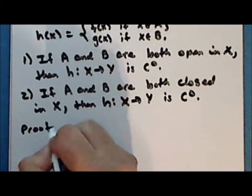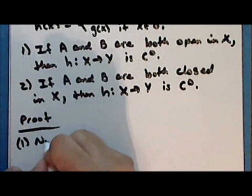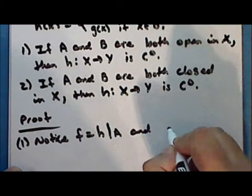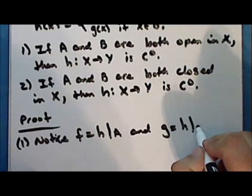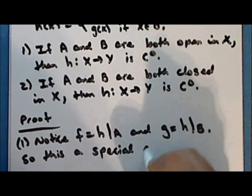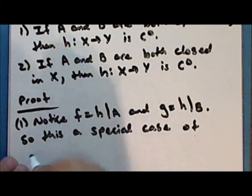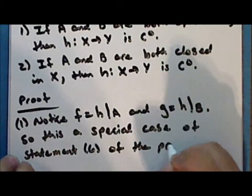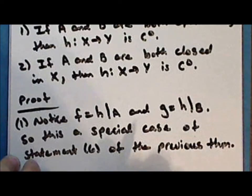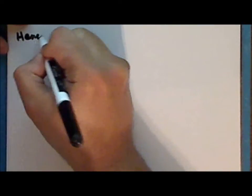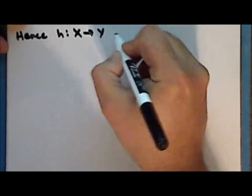Proof, first statement. Notice that the function f is the restriction of the function h to the subspace a, and the function g is the restriction of the function h to the subspace b. So this is a special case of statement six of the previous theorem, and hence by statement six of the previous theorem, the function h mapping x into y is continuous.